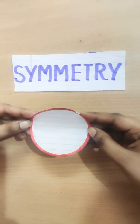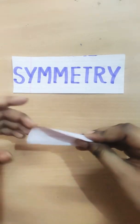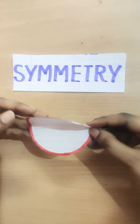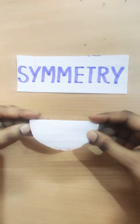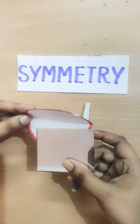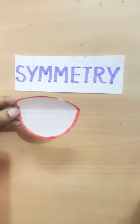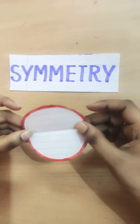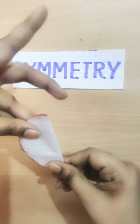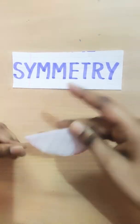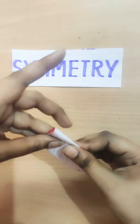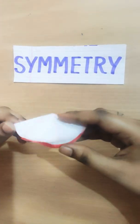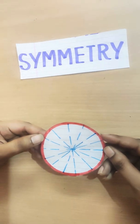Now let's check symmetry in a circle. The line through the center is known as the diameter. When I fold the circle along its diameter, the first part overlaps with the other part. If I fold it vertically, it is again overlapping. If I fold it in any other way, it is still overlapping. Since a circle can have infinite diameters, it has infinite lines of symmetry.